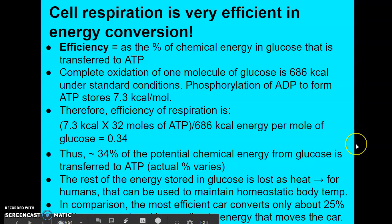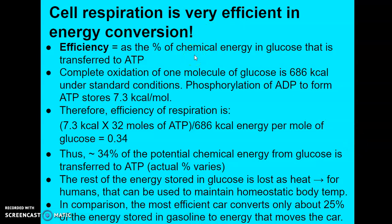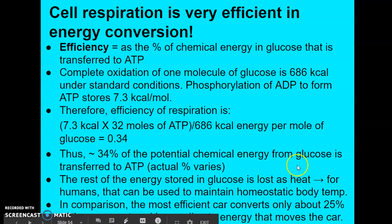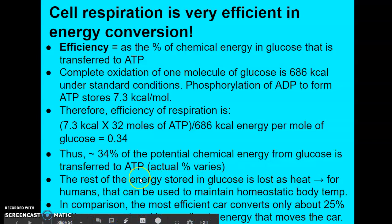Cell respiration is a very efficient process in energy conversion. Efficiency here refers to the percentage of chemical energy in glucose transferred to ATP. Complete oxidation of one molecule of glucose releases 686 kcal under standard conditions, and phosphorylation of ADP to make ATP stores 7.3 kcal. So efficiency is 7.3 kcal times about 32 moles of ATP divided by 686, which gives about 0.34 — meaning about 34% of the potential chemical energy from glucose is transferred to ATP. The rest is lost as heat, which in us helps maintain homeostatic body temperature.